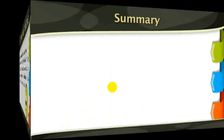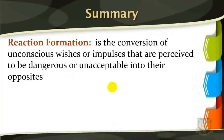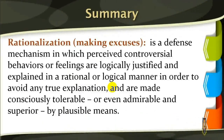Study session summary. In this study session, we discussed the psychodynamic perspective as emphasizing unconscious motives and desires as well as the importance of childhood experiences in shaping personality. We also discussed two types of defense mechanisms: reaction formation and rationalization. Reaction formation is a conversion of unconscious wishes or impulses that are perceived to be dangerous or unacceptable into their opposites. While rationalization, or making excuses, is a defense mechanism in which perceived controversial behaviors or feelings are logically justified and explained in a rational or logical manner in order to avoid any true explanation, and they are made consciously tolerable or even admirable and superior by plausible means.